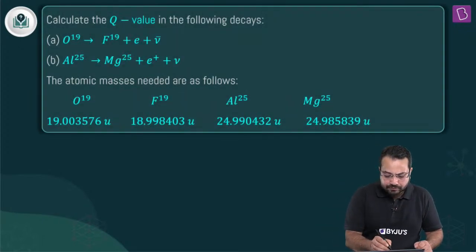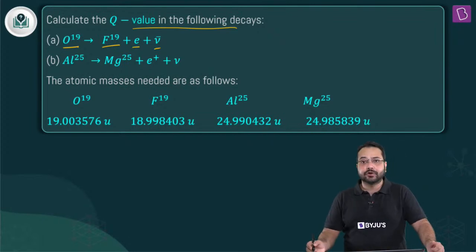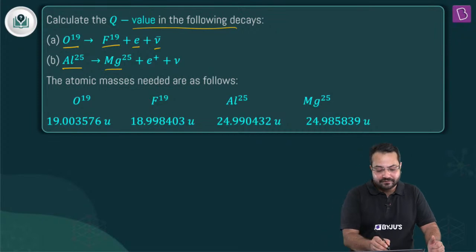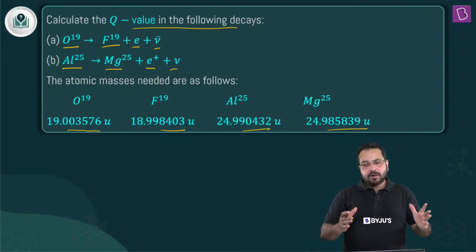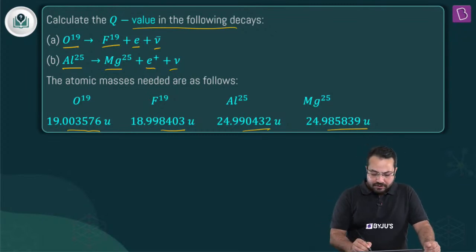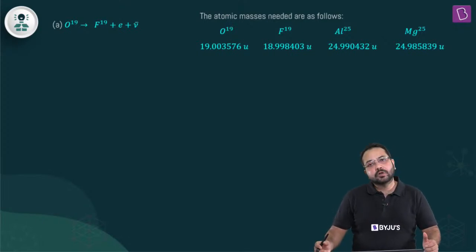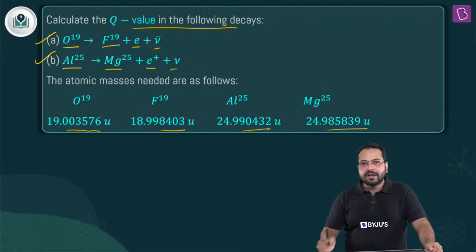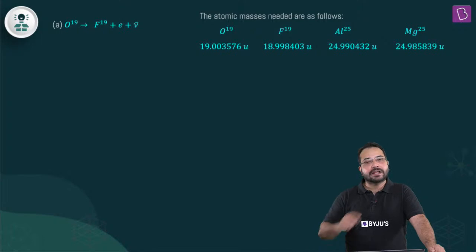Here's the first question: calculate the Q-value in the following decays. First, oxygen-19 decays into fluorine-19 plus an electron plus an anti-neutrino. Second, aluminium-25 disintegrates into magnesium-25 plus a positron plus a neutrino. The atomic masses of all elements are given. What we need to find is the Q-value. The first thing I want to understand from you: what is Q-value, and can you identify these two nuclear reactions? They have a very specific name.